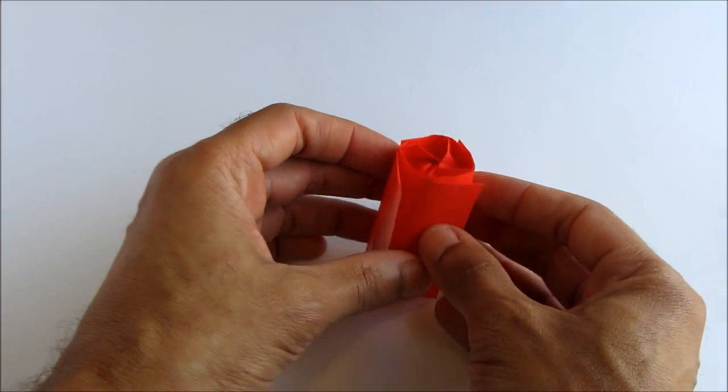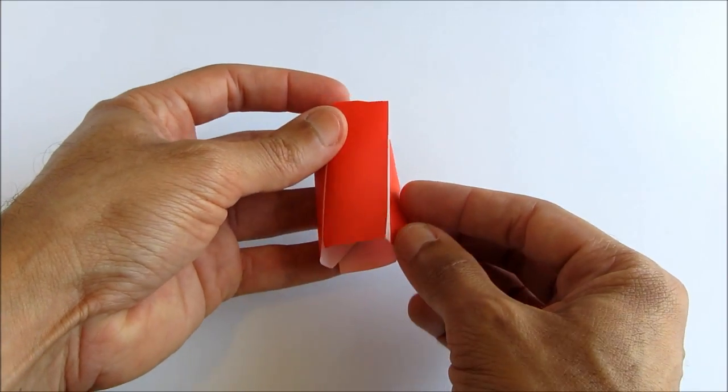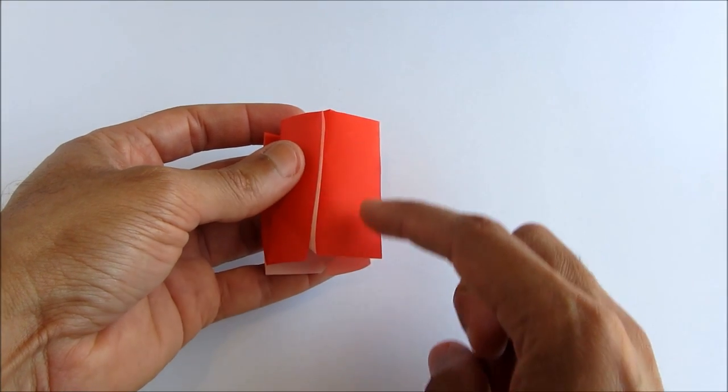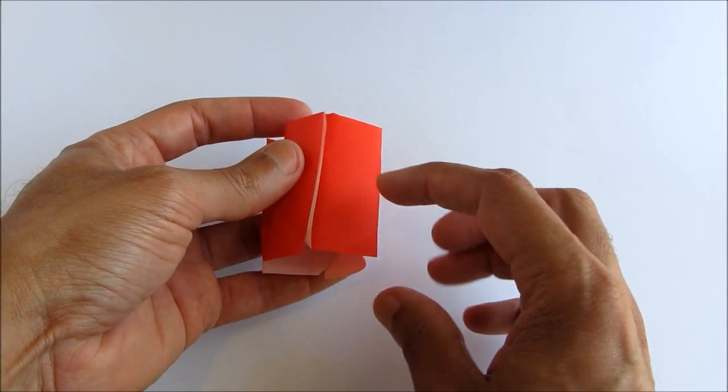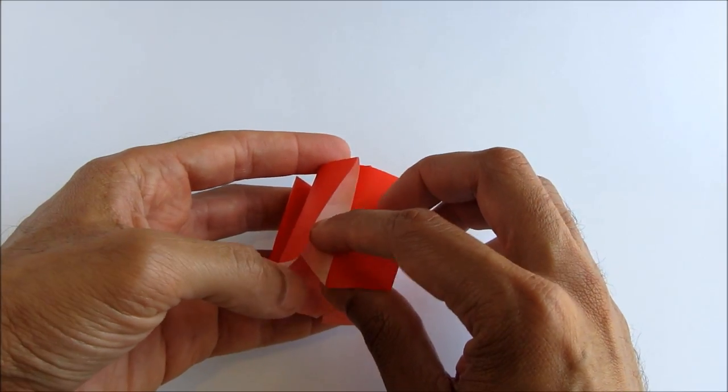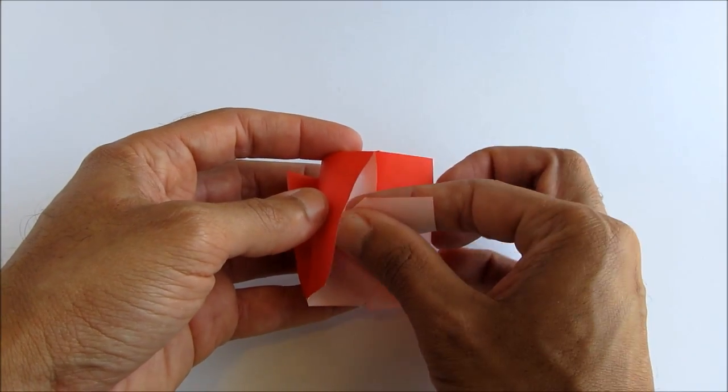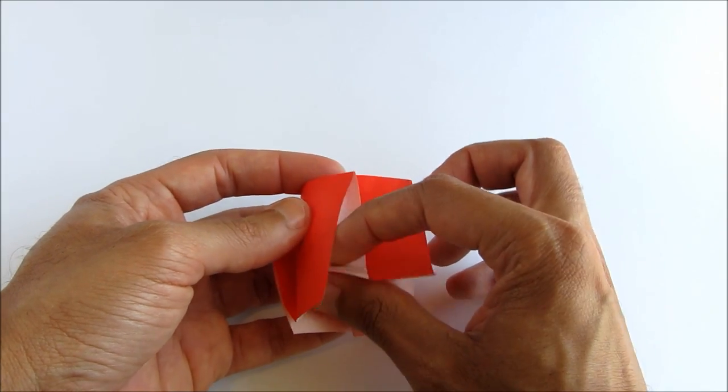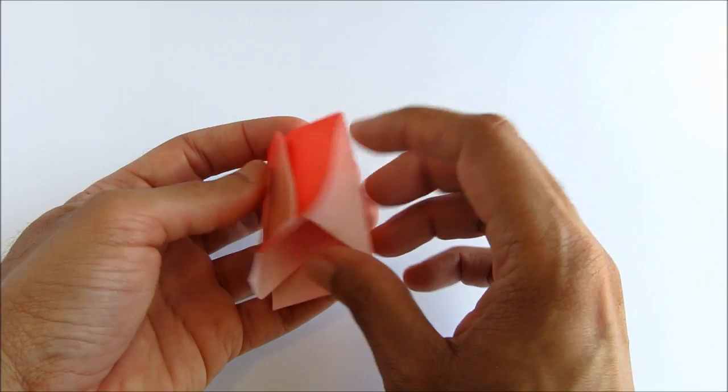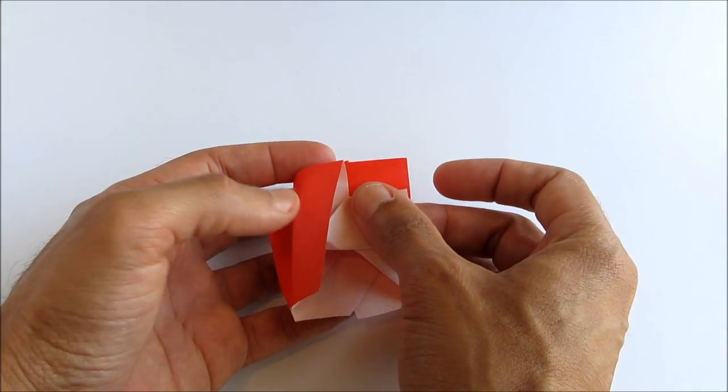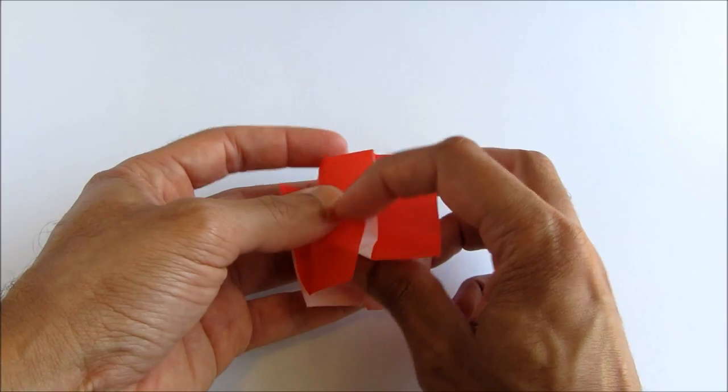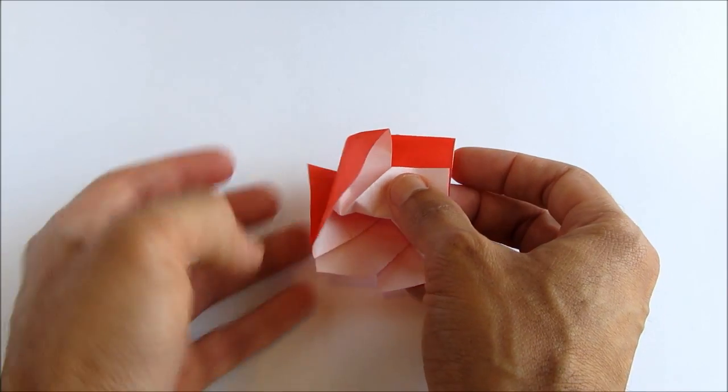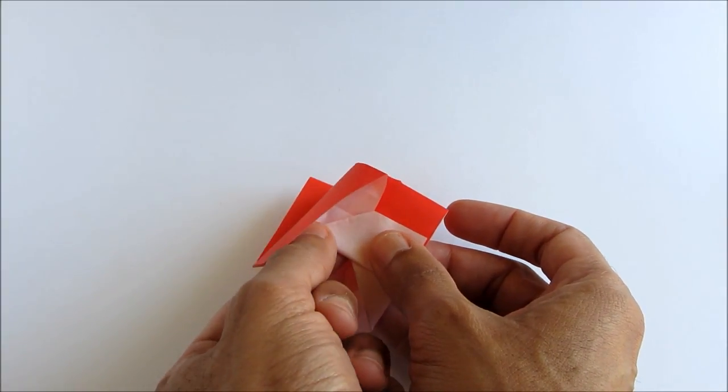So that was the hard part, so let's proceed with finishing up our rose. So what we're going to do for each of the four edges is to fold them up. So we'll start with this one. We're not going to fold it all the way up. Maybe leave a centimeter or less. And you may need to get inside with your other hand. And complete the fold like this.